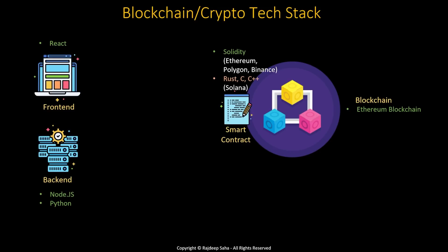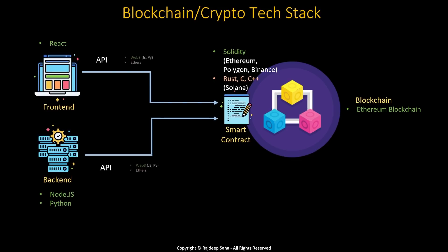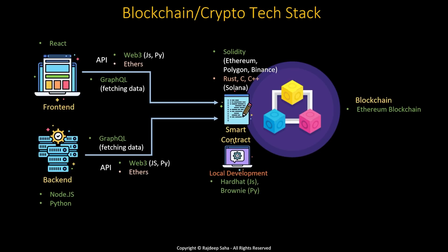Alternatively, you can use Rust, C, or C++ to write smart contracts for the Solana blockchain, which is an up-and-coming blockchain. Solidity is similar to Node.js and Python, so if you know either of those languages, it should be easy to pick up. Both the front end and back end will interact with the smart contract using an API — you can code the API using Web3 API or ethers. In this diagram, the technologies shown in green are the recommended ones to learn as they are the most popular right now. Fetching data from the blockchain can be slow, so you use GraphQL to query and speed things up. For local development and testing of smart contracts, you can use Hardhat for JavaScript or Brownie for Python.